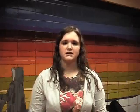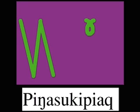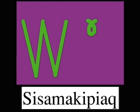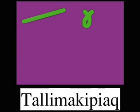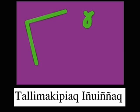To practice this, we are going to go all the way up to 400, counting by 20s. The 40th number is malaguqi biak, shown by the numeral for two to the left of the numeral for zero, meaning two times 20. The 60th number is pingasuki biak, shown and said as three times 20. The 80th number is sisamakipiak, four times 20. The 100th number is talimakipiak, five times 20. The 120th number is talimakipiak inyuinyak, said as five times 20 plus 20.